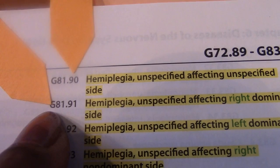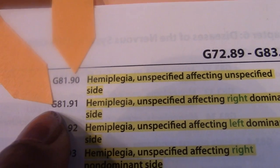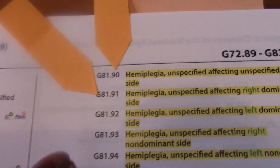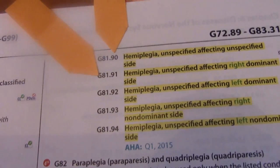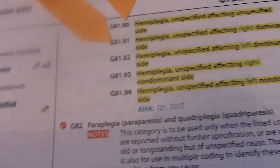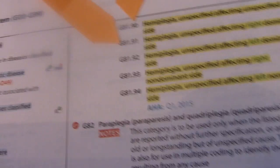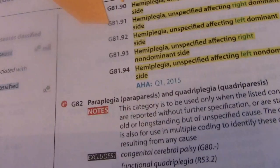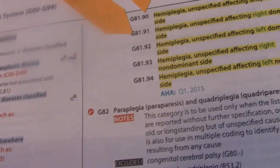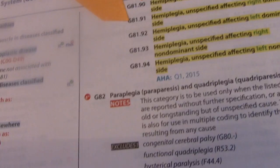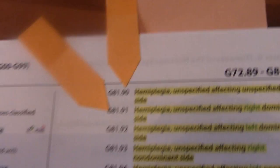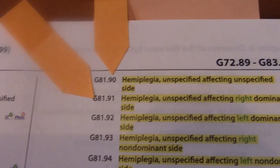Number two said cerebral thrombosis with hemiplegia, right dominant side. Isn't that the same thing we just coded? So number two has the very same codes: I66.9 for the cerebral thrombosis, and hemiplegia of the right dominant side — G81.91.